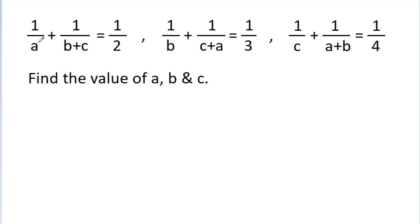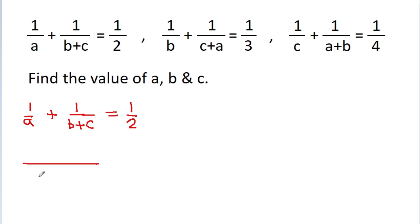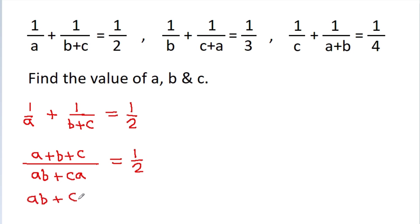The first equation is 1 by a minus 1 by b minus c is equal to 1 by 2. We can get a times b minus c, which is ab minus ca, and b minus c plus a gives us a minus b minus c, so ab minus ca by a minus b minus c is equal to 2.